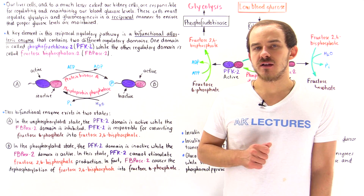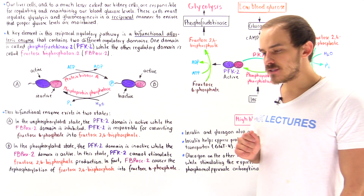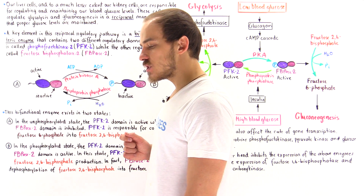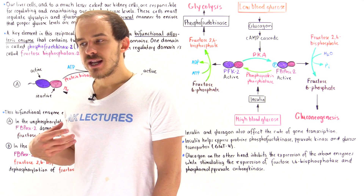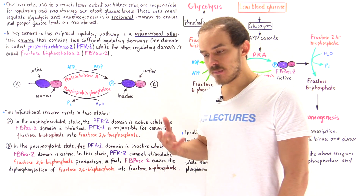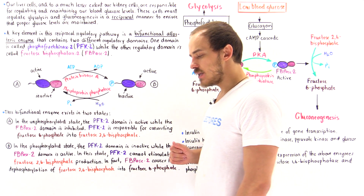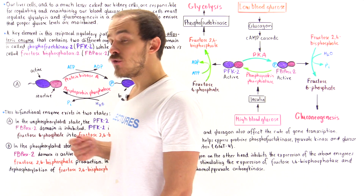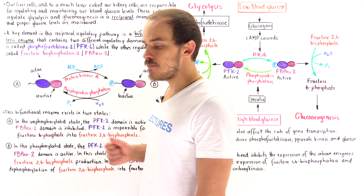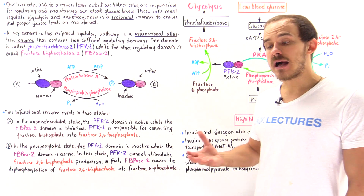One job of our liver cells, and to a much smaller extent our kidney cells, is to actually regulate and maintain the proper glucose levels inside our blood. Why is that important? Because the cells of our body actually use that glucose to form the energy ATP molecules, and the ATP molecules are then used to power many different types of processes.